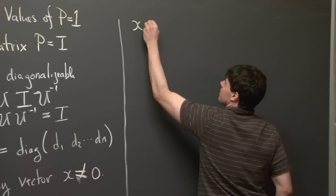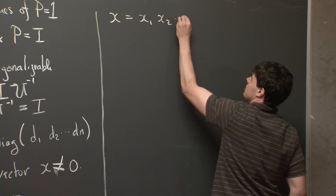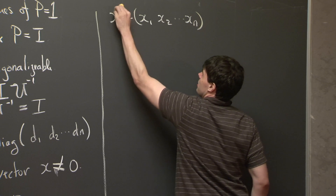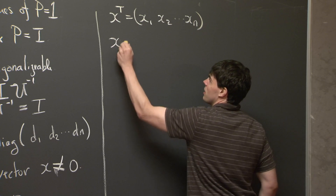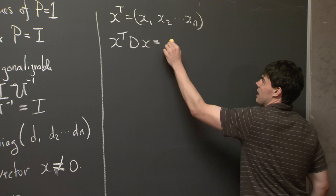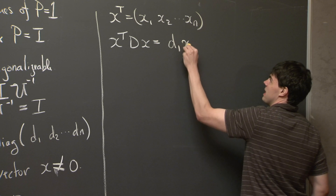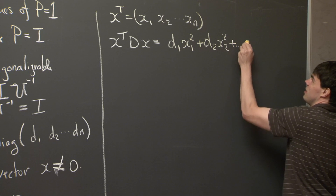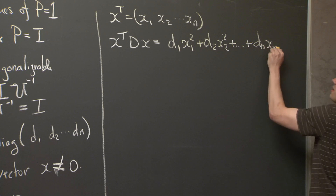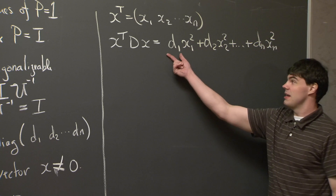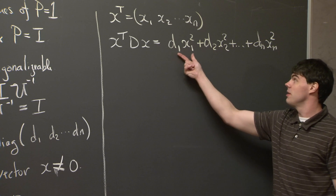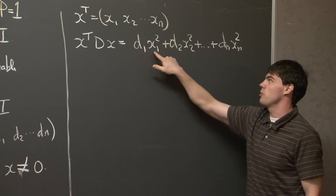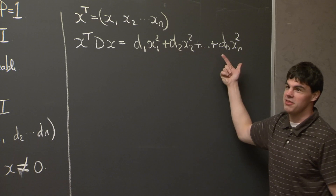If I write x out using components x1, x2, ..., xn, then I can work out the quantity x transpose Dx. We see that we get a sum of squares: D1 times x1 squared, plus D2 times x2 squared, plus ... plus Dn times xn squared. By definition, each coefficient is positive, and the product of a positive number with a square is positive. A sum of positive numbers is going to be positive. So the whole thing is positive.